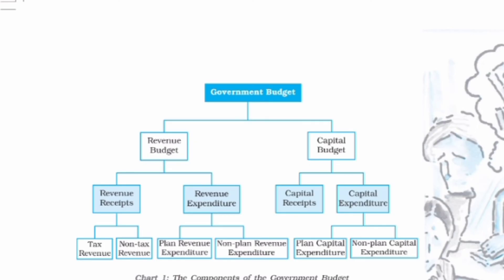Revenue Expenditure is further classified into Planned Revenue Expenditure and Non-Planned Revenue Expenditure. Capital Budget is classified into Capital Receipts and Capital Expenditure. Capital Expenditure is further classified into Planned Capital Expenditure and Non-Planned Capital Expenditure.